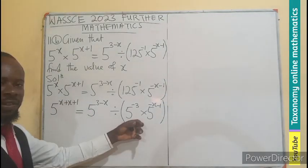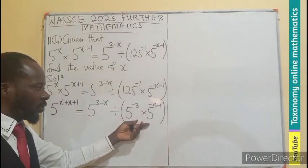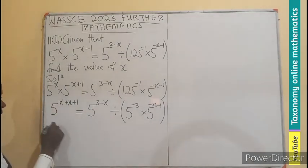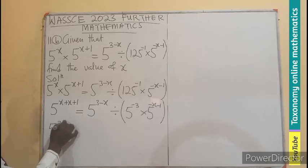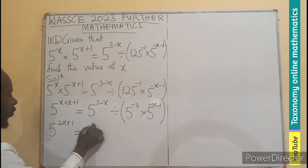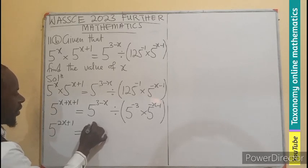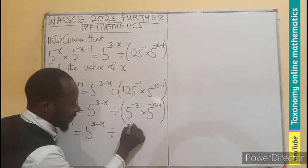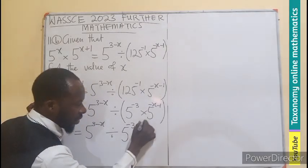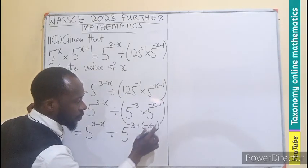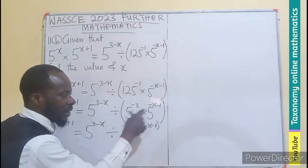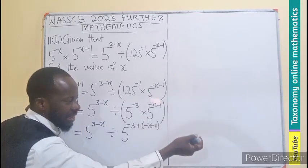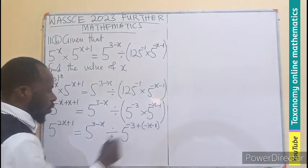Whatever we have done here, we do the same here by adding the powers since we have the same base. So here is 2 plus x plus x. That will give us 2x. So 5 exponent 2x plus 1 should be equal to 5 exponent 3 minus x divided by 5 exponent minus 3 plus negative x minus 1. We are adding the powers. Negative 3 plus negative x minus 1. All of this is the power from the second base. So we put them in the brackets. So now we can compute that side.